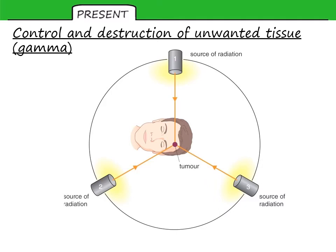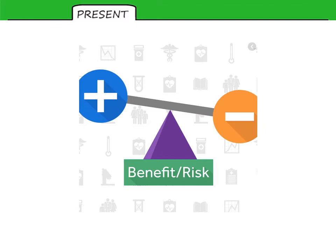For control and destruction, we use gamma radiation — firing a beam at a tumour from multiple angles to minimise damage to surrounding tissue. In this example, firing from three different angles means the tumour receives three doses while surrounding tissue receives only one dose and is not damaged to the same degree. There is always a trade-off between benefit and risk. The risk of damage to surrounding tissue is outweighed by the benefit of destroying the tumour. These questions will often be based on data such as dose given or percentage risk of a particular outcome.